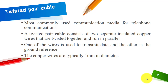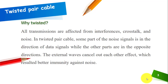It is important to note that twisted pair cable consists of two insulated copper wires which are twisted together. One of the wires is used to transmit data and the other is a ground reference. The copper wires are typically one millimeter in diameter.